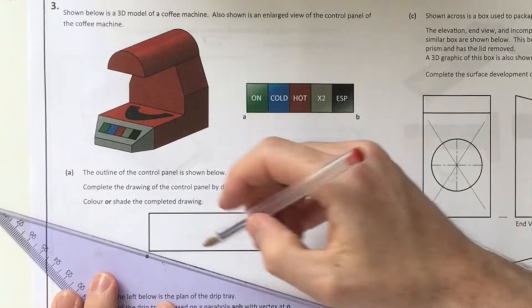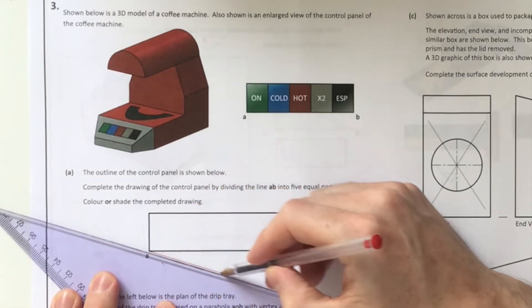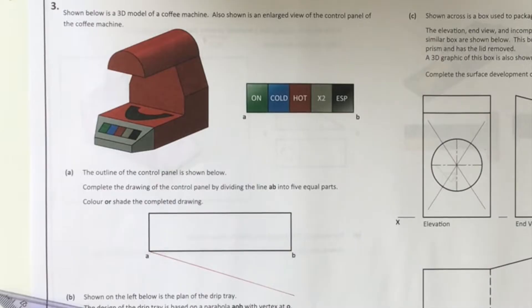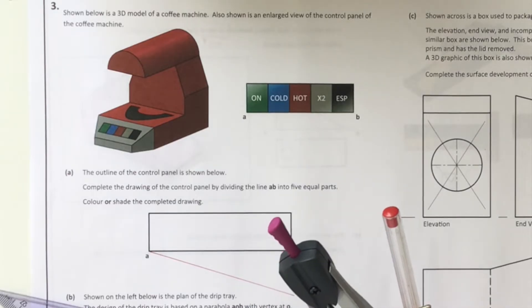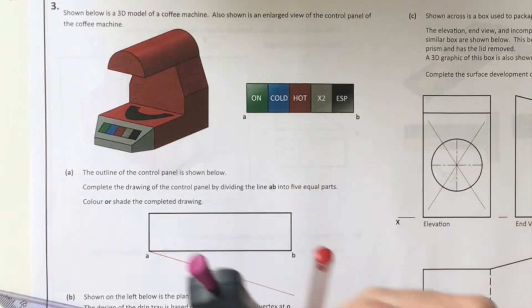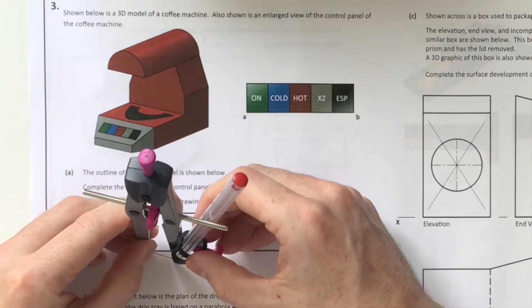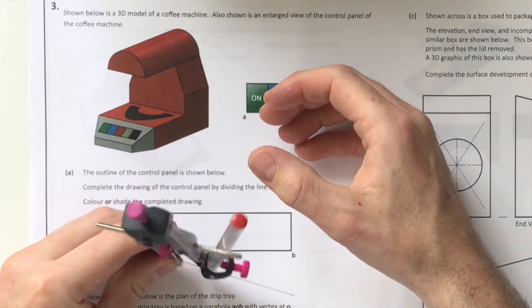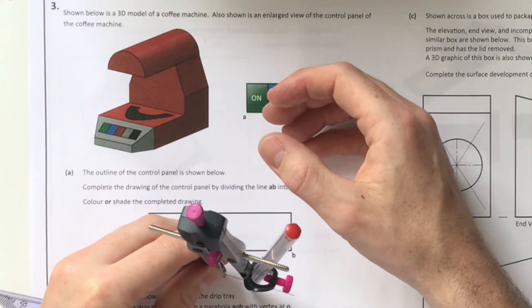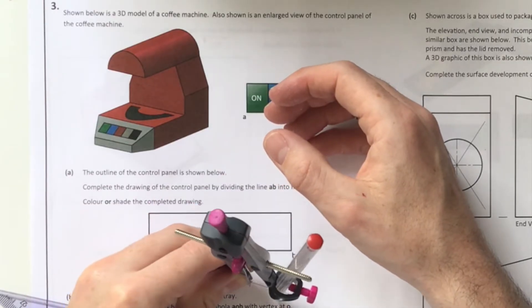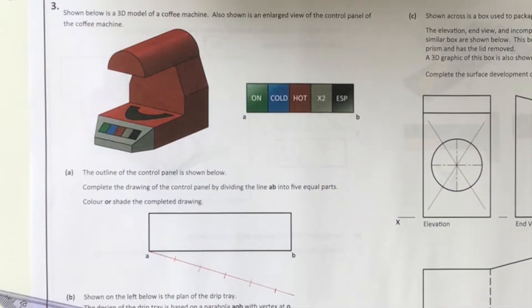All you're doing is an acute angle from point A. It's asking you to recreate the buttons for the coffee machine. You've got 5 of them. You're setting your compass to any length, then stepping off 5 equal positions along that acute red line. I've got any length on my compass, starting at A and going down 5 equal divisions.